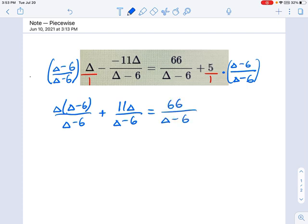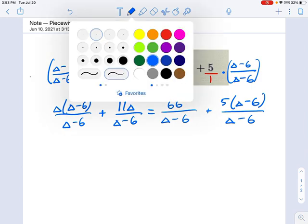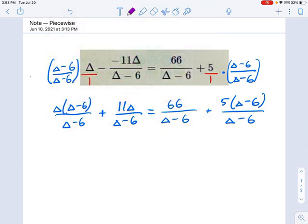Then we have 66 minus delta over six plus five times delta minus six over delta minus six. That's great. Now you could go ahead and combine these fractions. You could do all sorts of things, but what I like to do before we start digging any further into this is just cross out all those denominators.